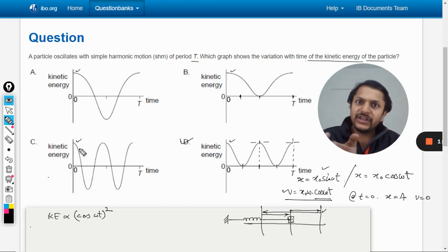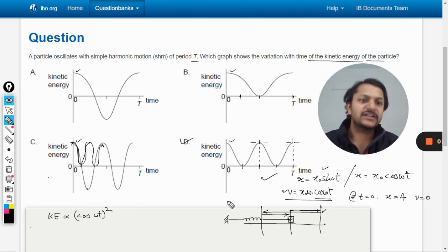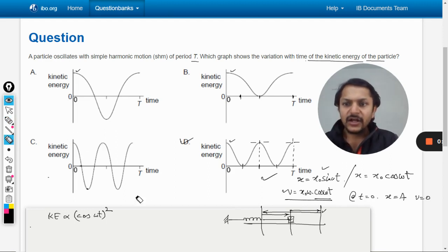So there will be no negative values. This graph pertains to the cos variation, but if you square it, one squared will be one, zero squared will be zero, minus one squared will be one. So this point will go up and the graph will come up like this. This is how we imagine it.